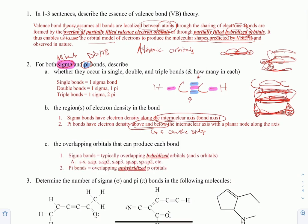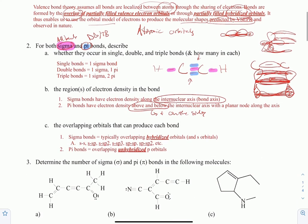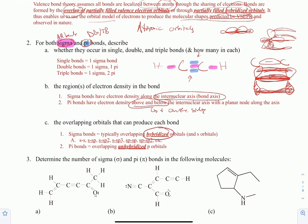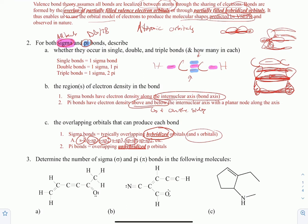Sigma bonds are formed by overlapping hybridized orbitals — that is key. Hybridized orbitals constitute most of what we see as sigma bonds, including S-S, S-SP, S-SP2, and SP combinations. The regular S orbital is also included, but that usually only applies to hydrogen. Pi bonds are made by overlapping unhybridized P orbitals, which remain on their three axes and overlap above and below the internuclear axis.